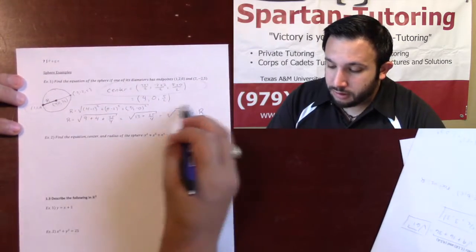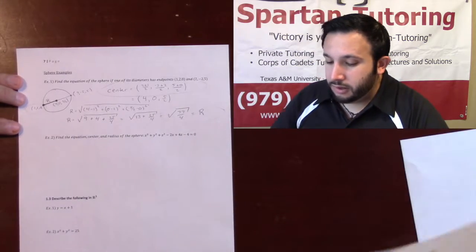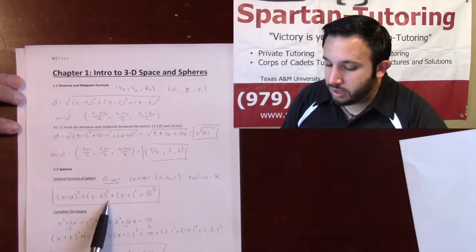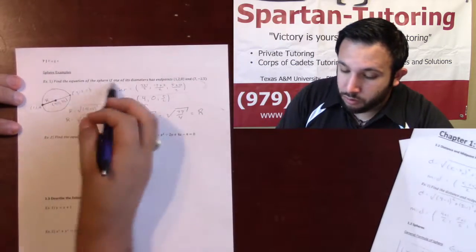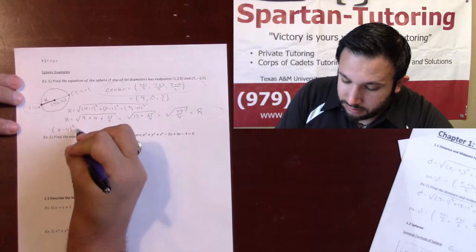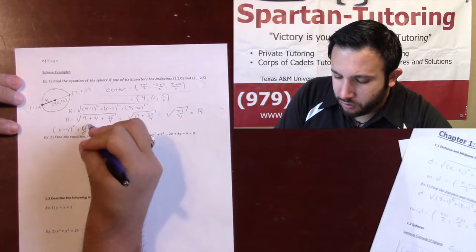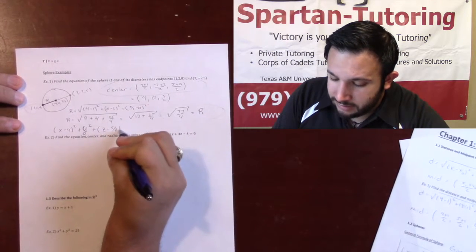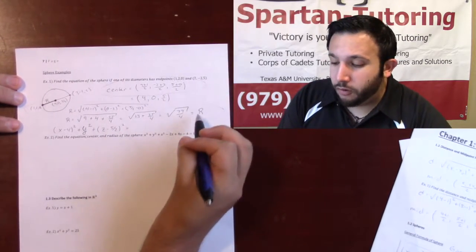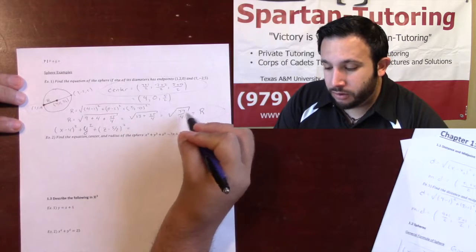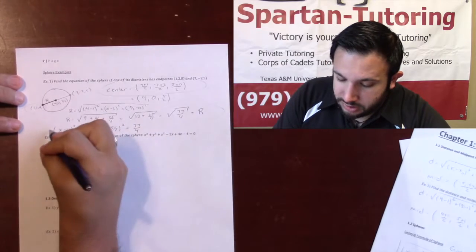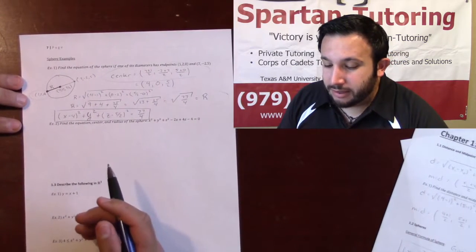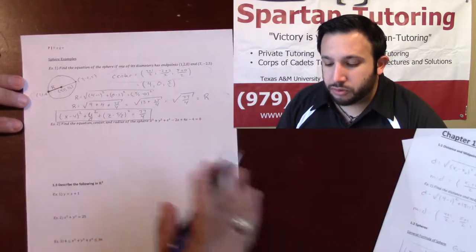Now that I have my center and my radius, I can find the equation. Plugging into the sphere formula, the equation of the sphere is (x minus 4) squared plus y squared plus (z minus 5/2) squared equals r squared. Since r is the square root of 77/4, r squared is just 77/4. That's why it's important to understand the distance and midpoint formulas — use them to find the center and radius.